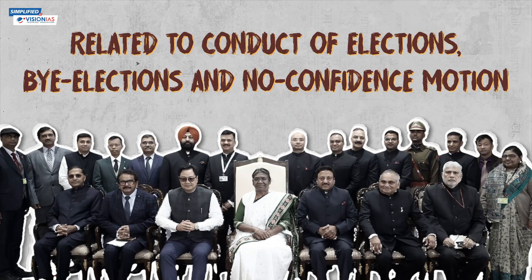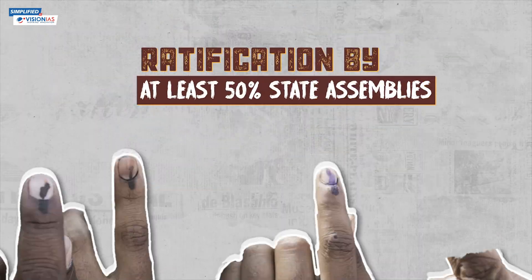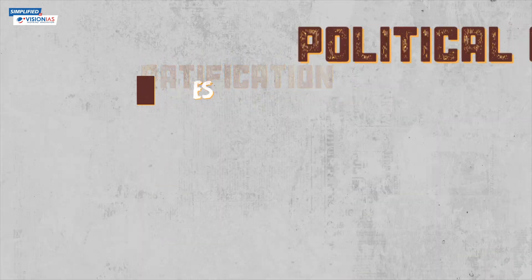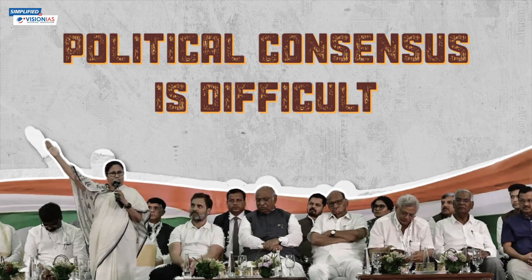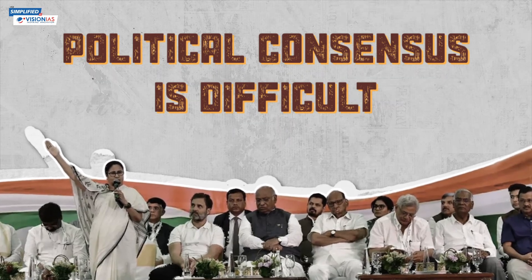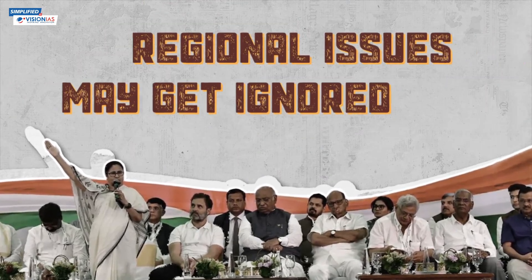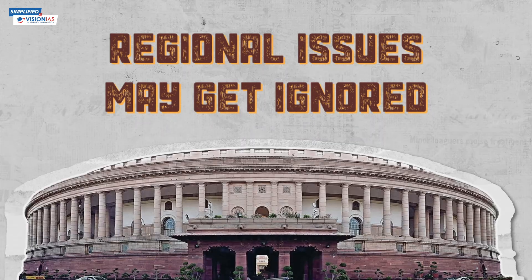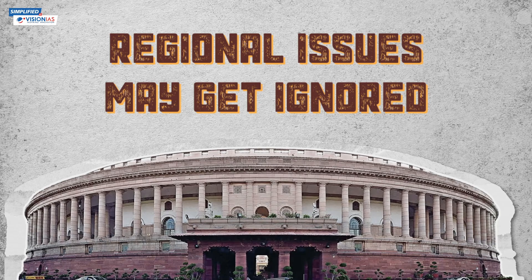Further, such an amendment would also require ratification by at least 50% of the state assemblies. Political consensus is difficult due to concerns about benefiting national parties at the expense of regional ones. Also, regional issues may get ignored as general elections to parliament tend to get more attention than assembly elections.